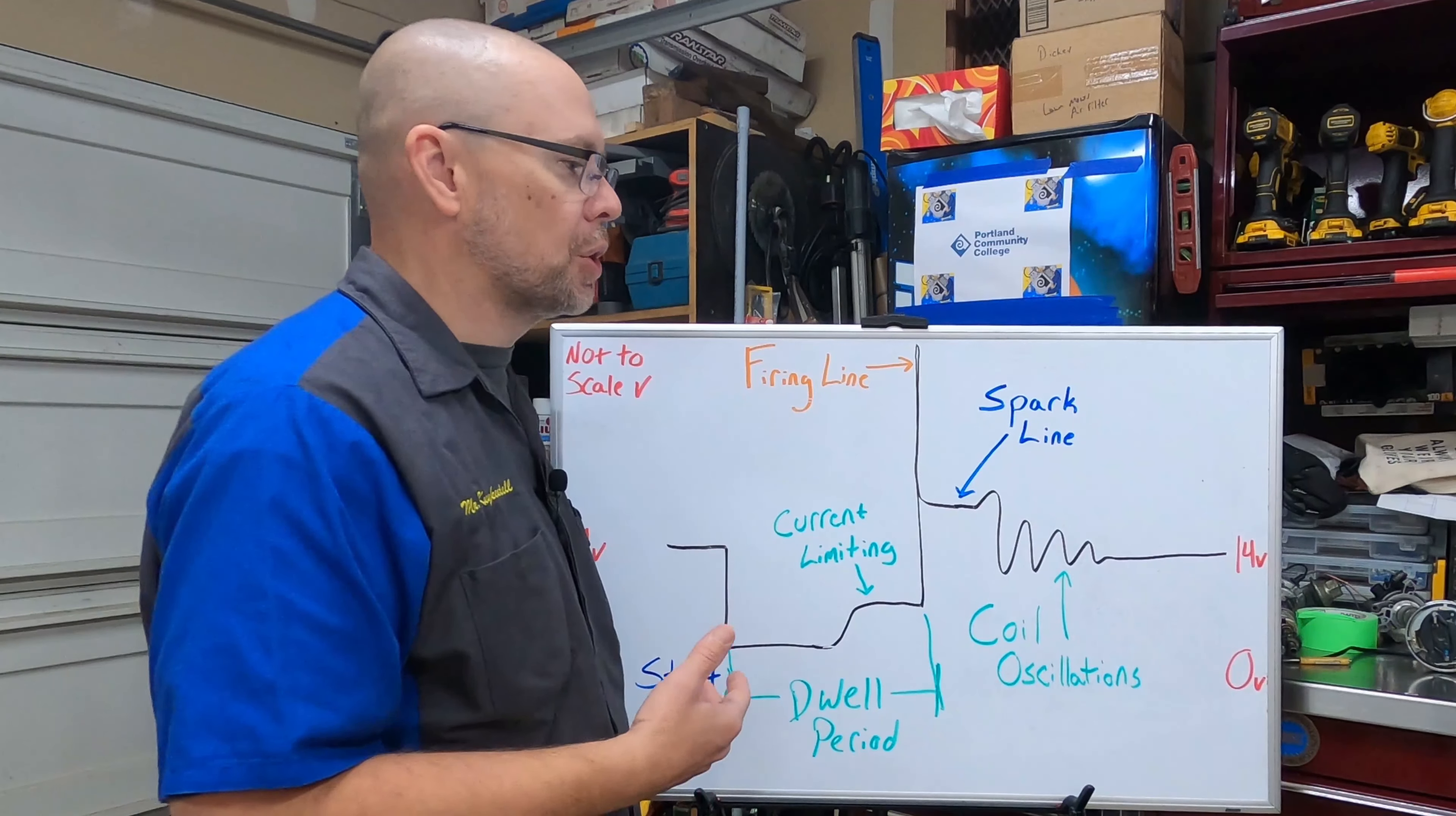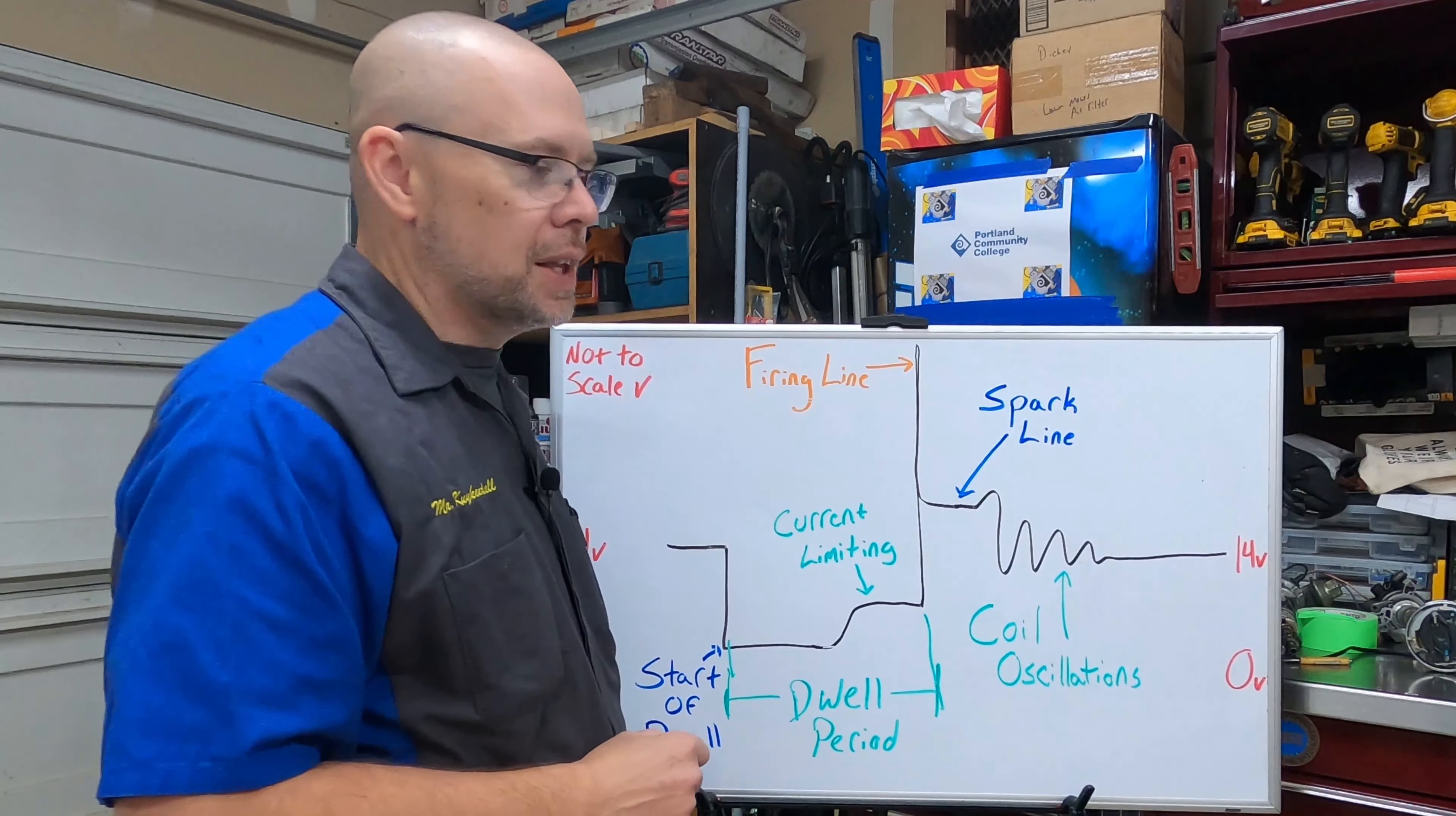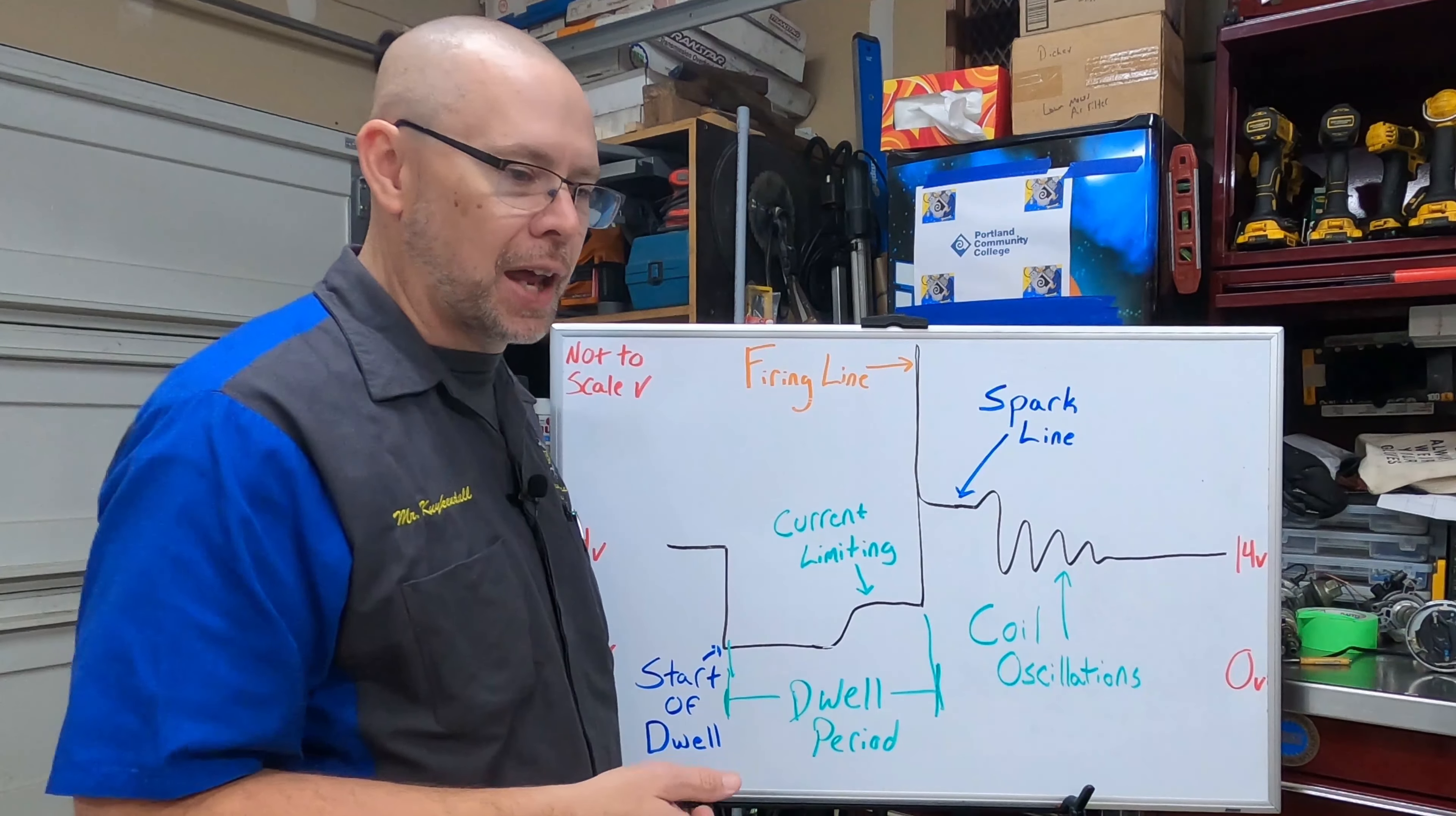If it is a distributor ignition system, DIS, our distributor ignition system where we have plug wires or even a coil near plug, anywhere of a plug wire, we simply disconnect the plug wire from a spark plug, move it aside where the spark can't jump out of it and we see where the firing line goes. That gives us an idea of about maximum coil voltage. Now realistically if we're dealing with a distributor we really need to pull the wire that comes out of the coil to go to the distributor cap.